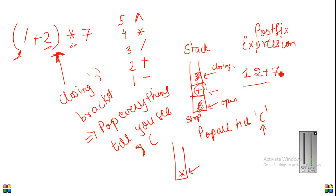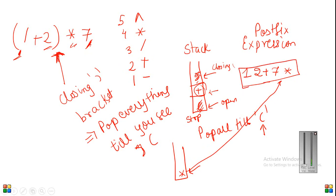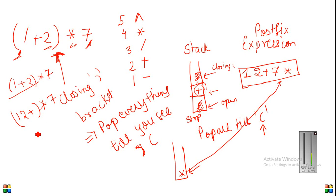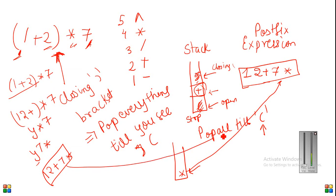Then we place a star and then seven. When the expression ends, we pop everything from the stack to make it empty. To verify mentally: one plus two in brackets gives us one two plus, then multiplied by seven gives one two plus seven star. Substituting y for one two plus, y into seven becomes y seven star, and replacing y gives one two plus seven star. You can verify this way.